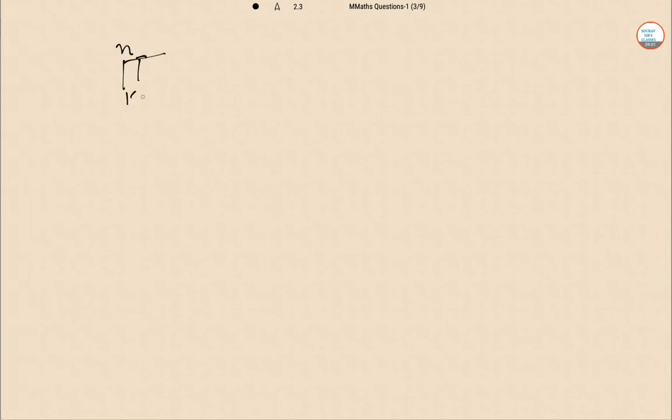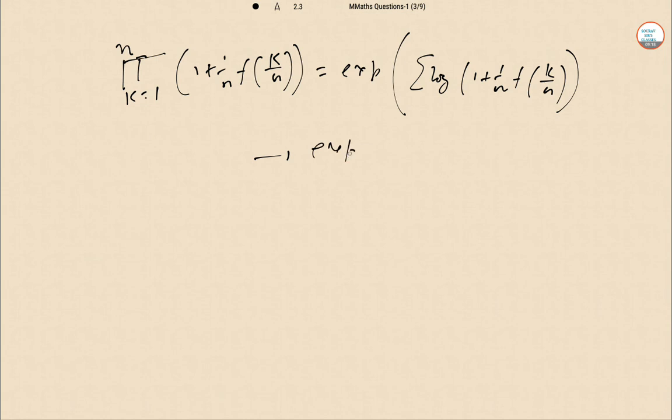Now this product K equal to 1, 1 plus 1 by N F of K by N equal to exponential of this summation. Log of 1 plus 1 by N F of K by N this part. So that is exponential of integral 0 to 1 F of X dx where N tends to infinity.